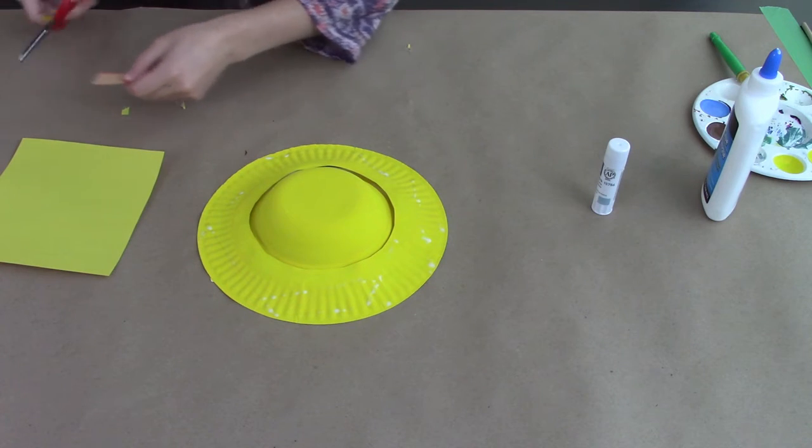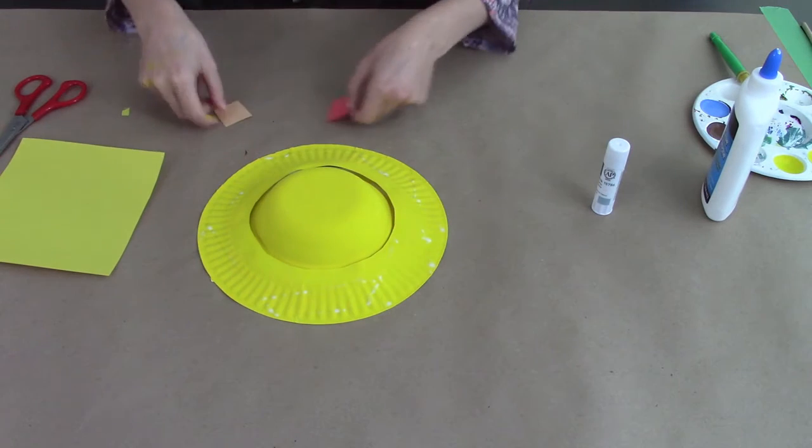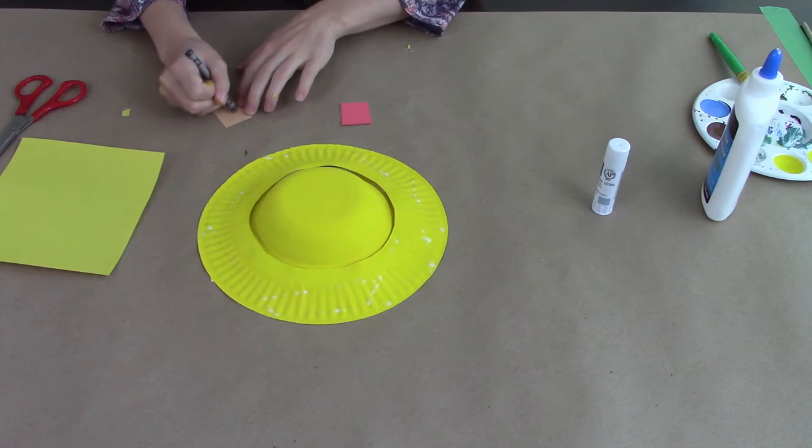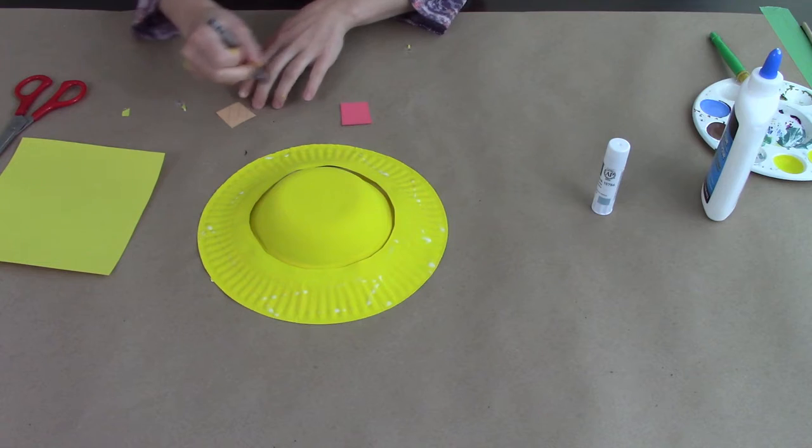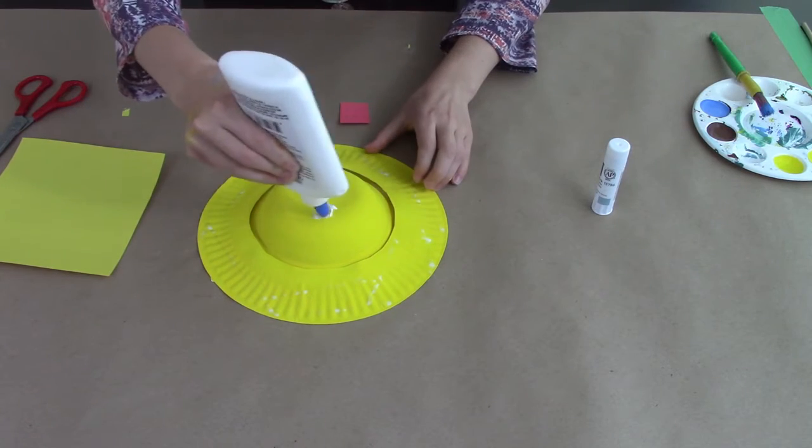So with my scissors I'm just going to cut these into nice little small squares. Since they're made to look like patches I'm going to add some markings on them with a crayon. And then I'm going to choose to glue mine onto the top of my hat.